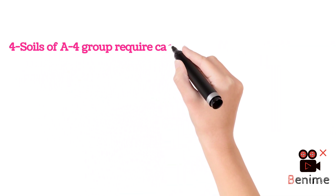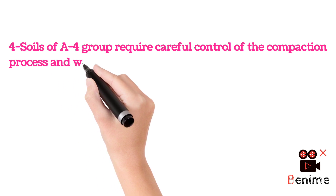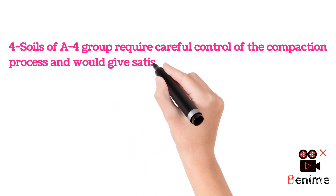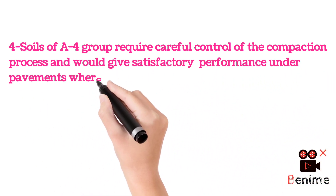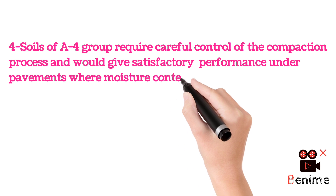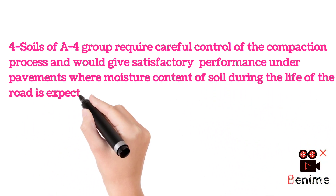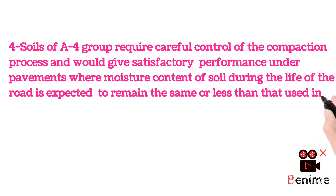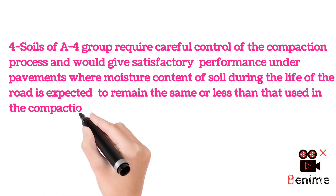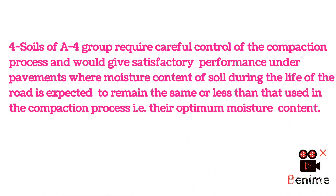Point 4: Soils of the A4 group require careful control of the compaction process and would give satisfactory performance under pavements where the moisture content of the soil during the life of the road is expected to remain the same or less than that used in the compaction process, i.e., their optimum moisture content.